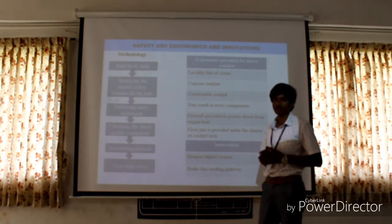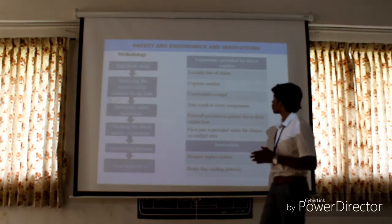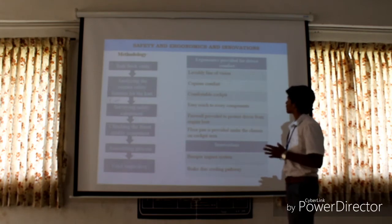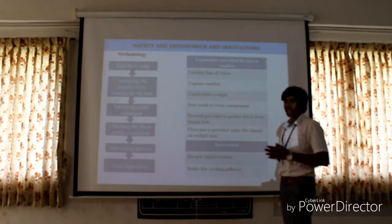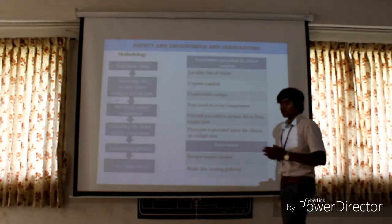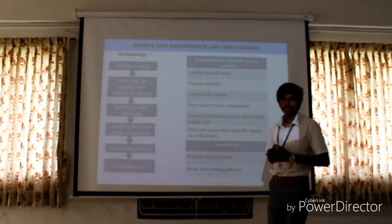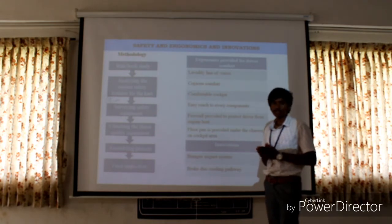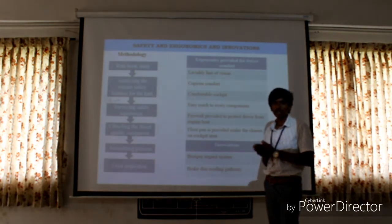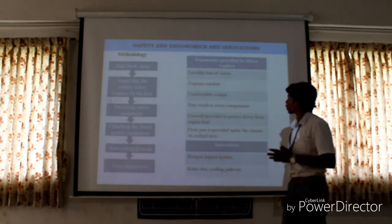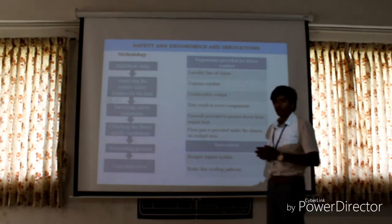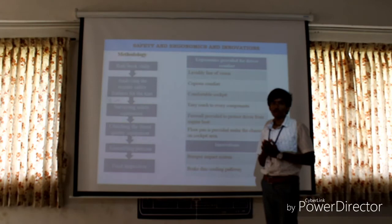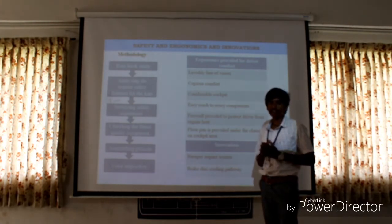The last step is final inspection. Now, ergonomics provided for driver comfort. First is a clear line of vision — whenever a driver drives a car, he needs a lot of vision so that he has a view of the road and oncoming vehicles. Next is copious comfort — whenever a driver drives, he needs a lot of comfort so that he does not end up in fatigue.